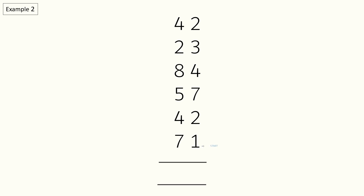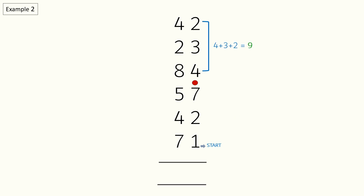Now that you are clear with the basic concept, let's go through one more example. We will start from the bottom digit on the ones side. 1 plus 2 plus 7 is equal to 10, so we put a dot above 7 and keep adding. 4 plus 3 plus 2 is equal to 9. Since there is nothing else to add, we will write 9 in the answer section. Next we will count the dots — we have one dot, so we will write 1 at the bottom of the next section.